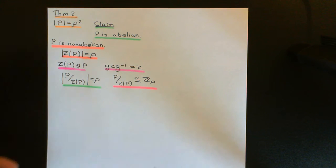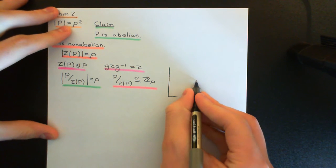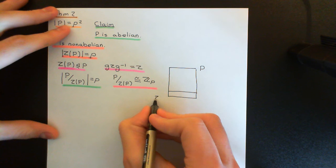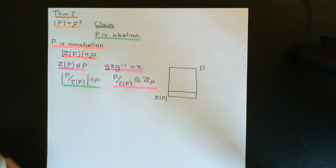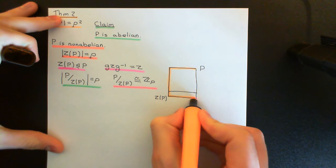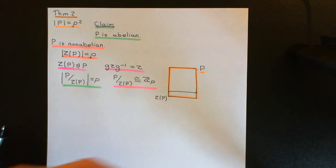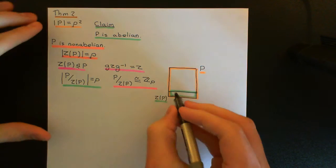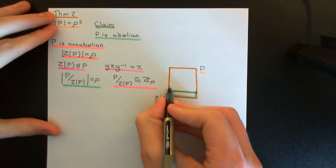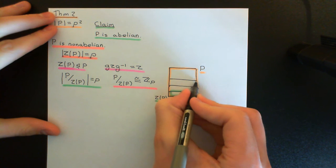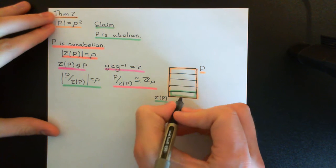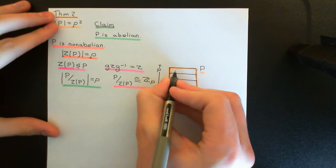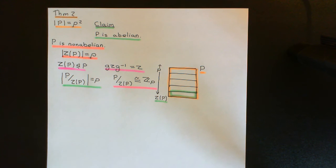Let me draw a picture of P being quotiented out by the centre. We have the large box representing P, the group of order P squared, and a thin strip representing the centre. Quotienting P into cosets of the centre, we end up with P cosets — say five for illustration, since five is prime. More generally there will be P such cosets.